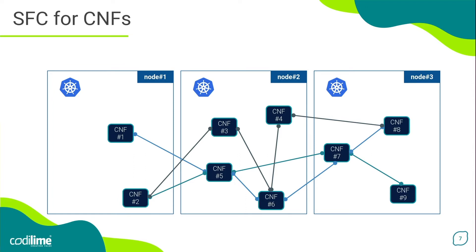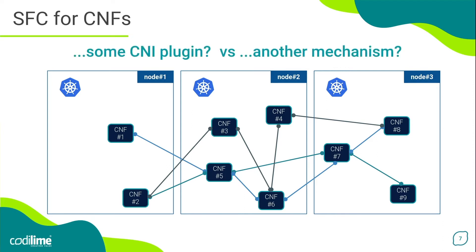So how can this requirement be addressed in Kubernetes? Normally in Kubernetes we use CNI plugins to configure network interfaces for containers. However, most of the popular CNI solutions configure only one network interface for each container. Therefore, to meet the requirements for our use case, we can use more advanced CNI plugins or rely on a completely different mechanism that will provide more than one network interface for the container.